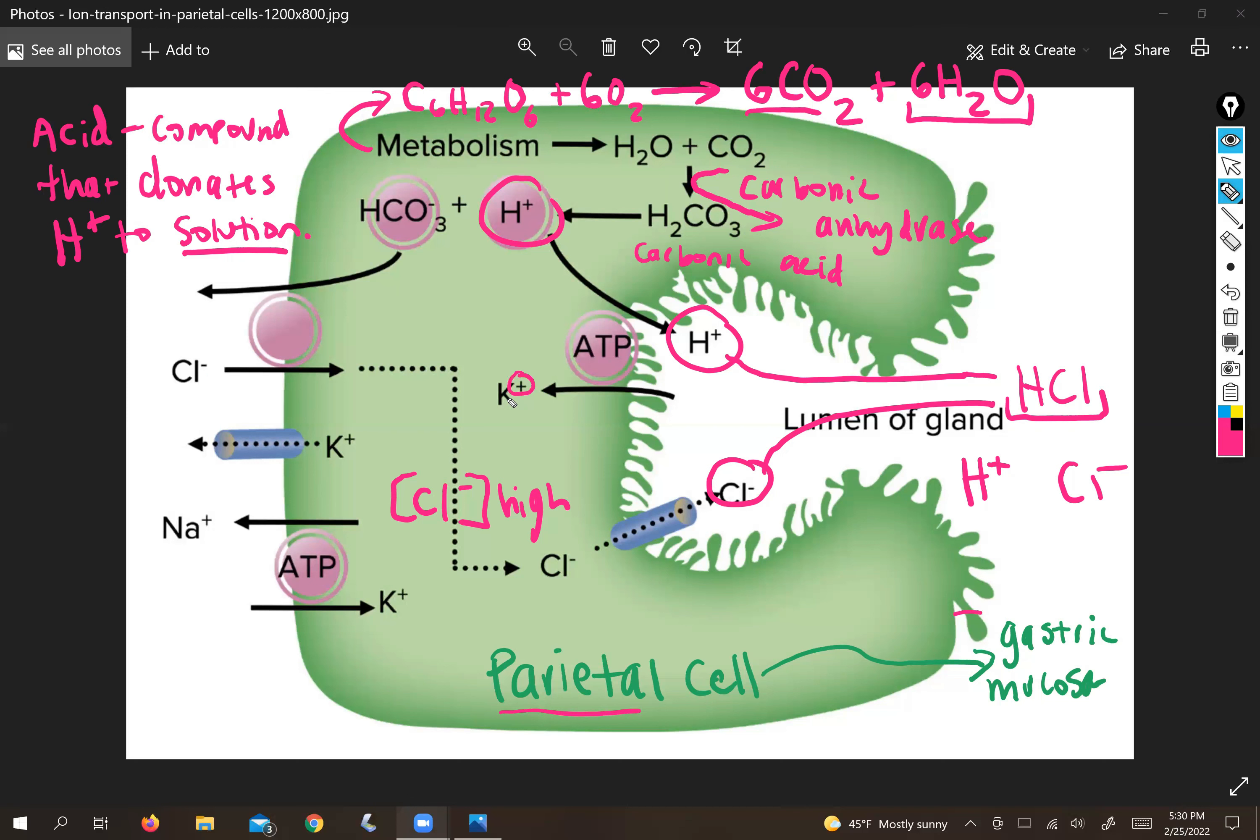So what we don't want to do is allow potassium specifically to accumulate inside the cell, because again, that's going to throw our electronegativity balance that the cell prefers off. And we're already losing negative charge in the form of chloride.